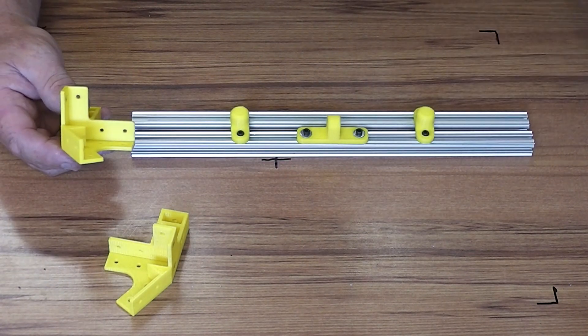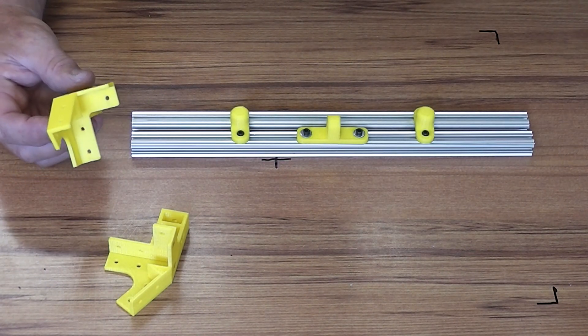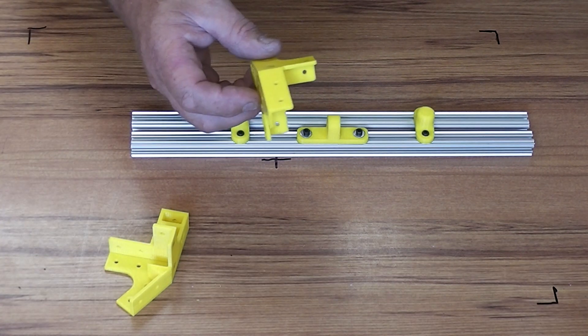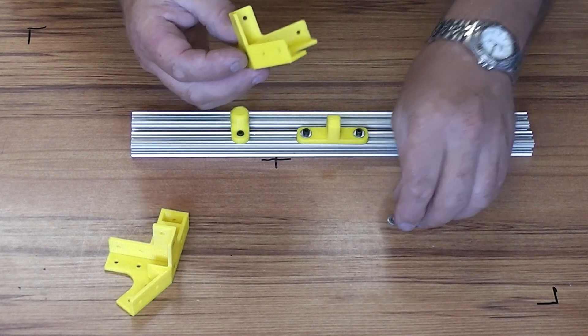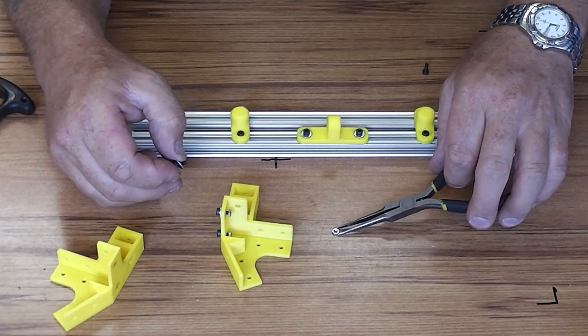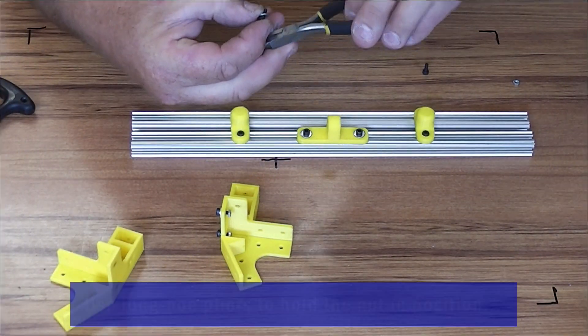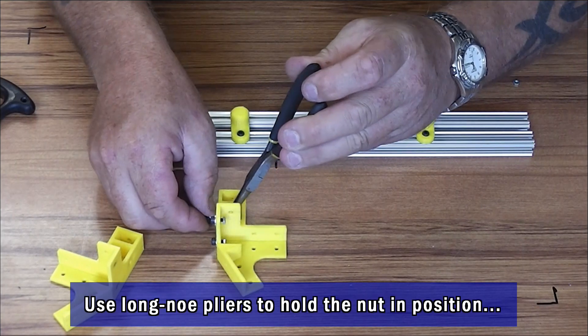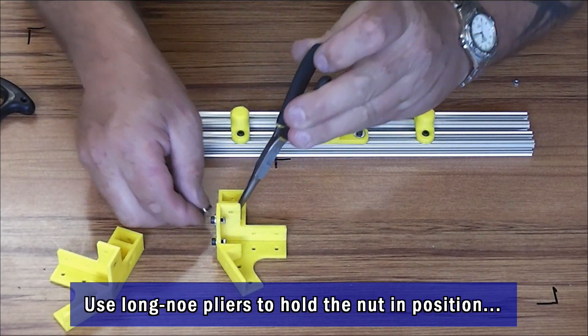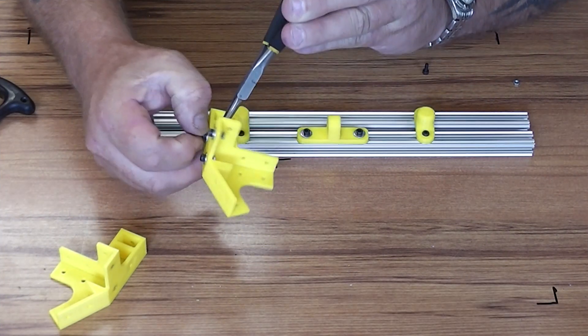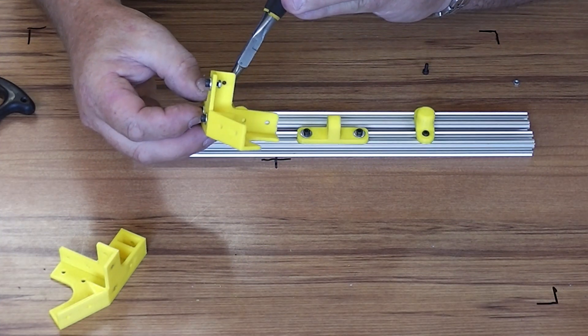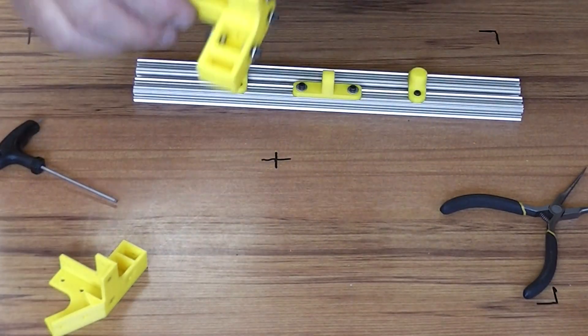Now again we can do the pre-assembly trick on these. It does make it easier for some of these to get them into the corners. Okay, so there it is, pre-loaded with the nuts that I want.